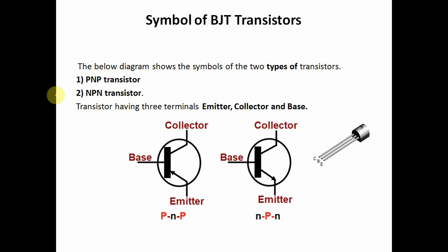What is the difference between transistors? A transistor has three terminals. The terminals are: base, emitter, and collector. This is the symbol of the transistor.